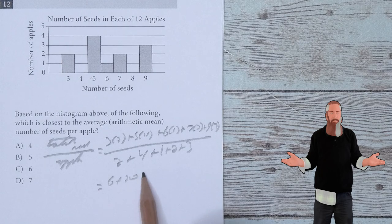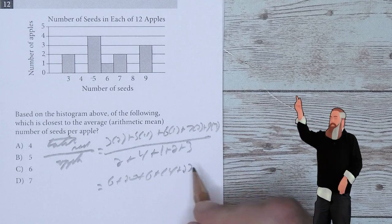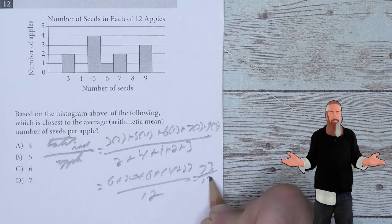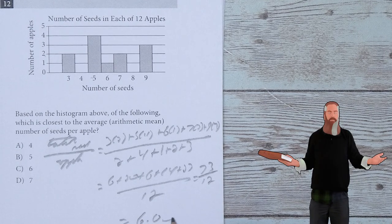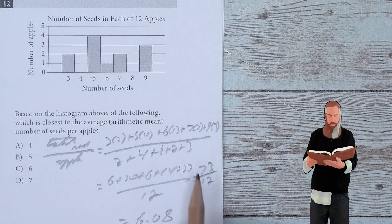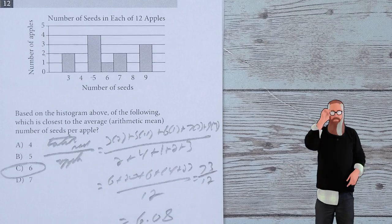All divided by 2 plus 4 plus 1 plus 2 plus 3. We're going to wind up with 6 plus 20 plus 6 plus 14 plus 27 over 12, which is 73 over 12. Using that calculator, we're going to wind up with 6.08. You can't have 0.08, so we wind up going with just that number 6. C is the answer.